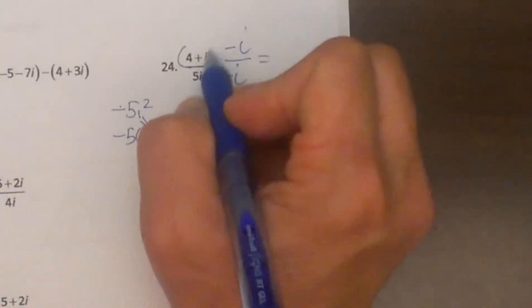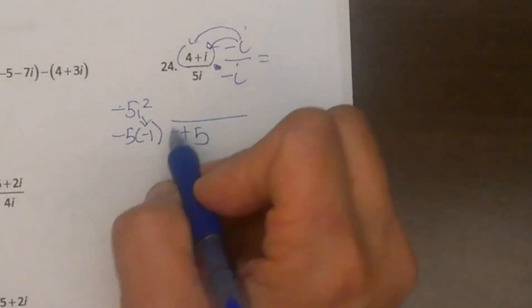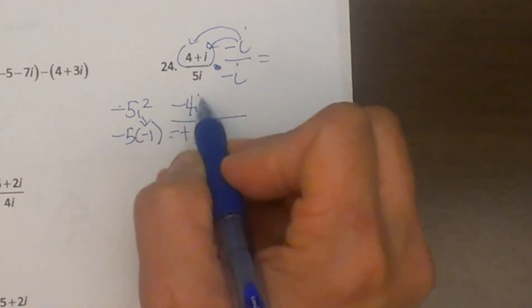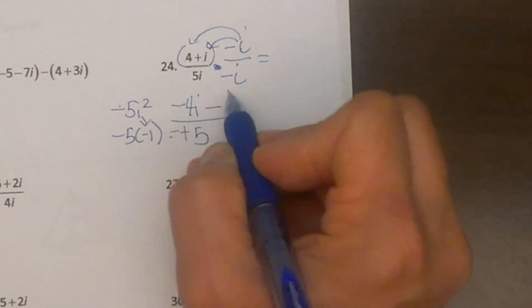Now in the numerator, in the top, I have got to distribute this negative i into both terms. So I am going to get negative i times 4 is negative 4i, and negative i times positive i is negative i squared.